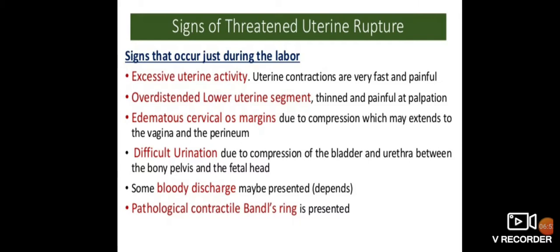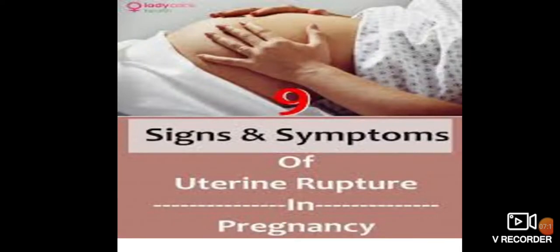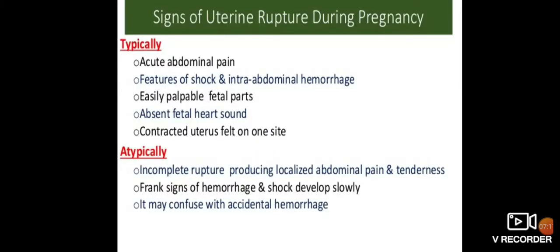Signs of threatened uterine rupture include: excessive uterine activity, over-distended lower uterine segment, difficult urination, some bloody discharge, and pathological retraction ring. Symptoms of actual uterine rupture include acute abdominal pain, features of shock, intra-abdominal hemorrhage, easily palpable fetal parts, absent fetal heart sounds, and a contracted uterus felt on one side.